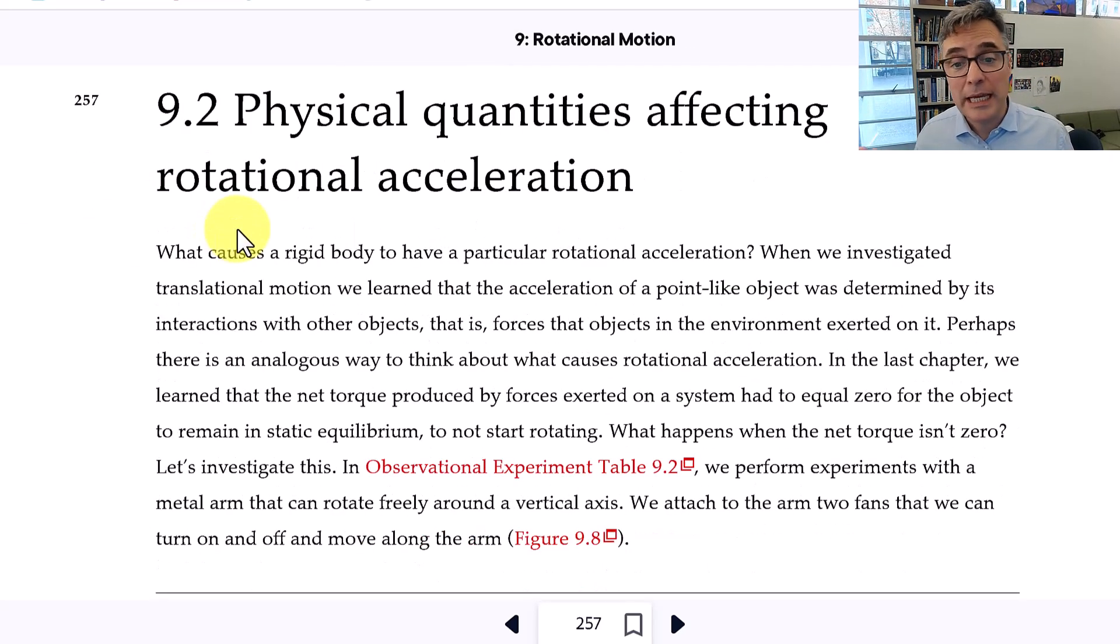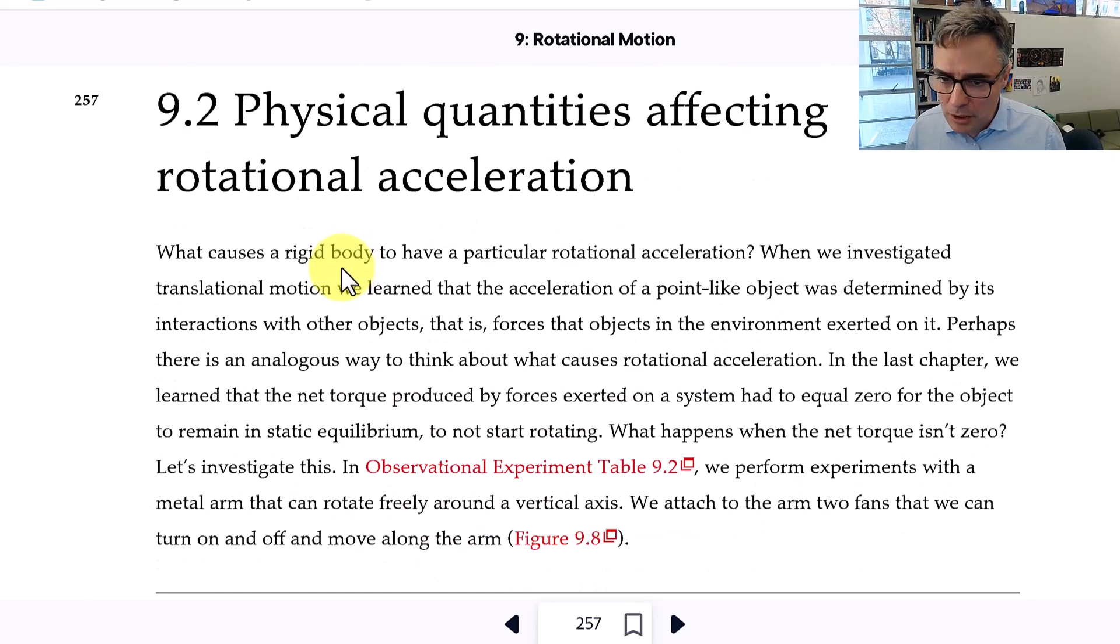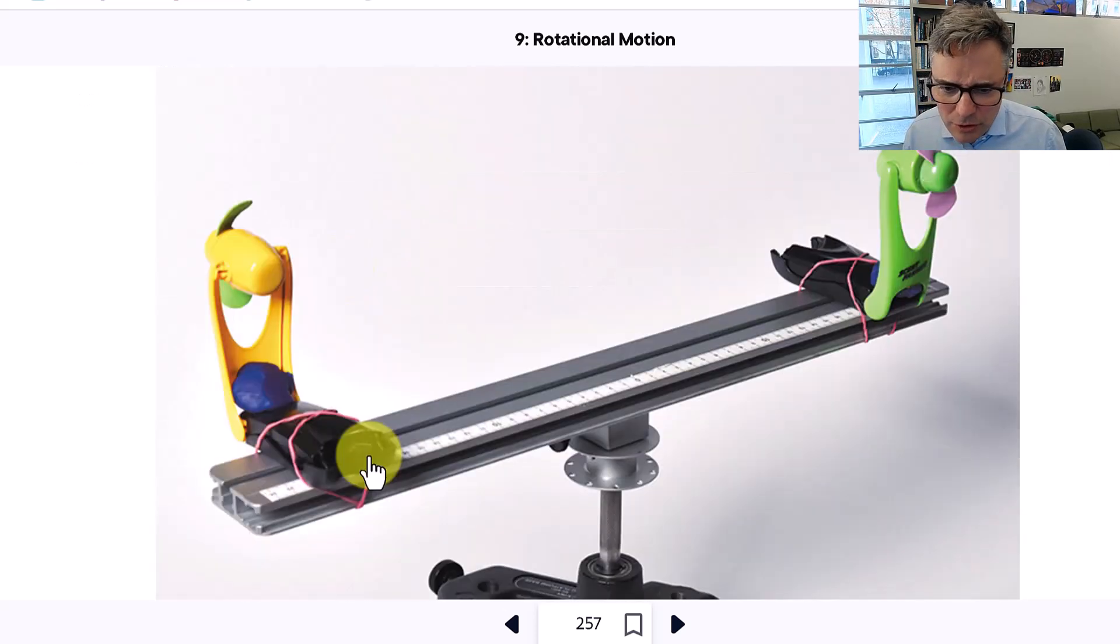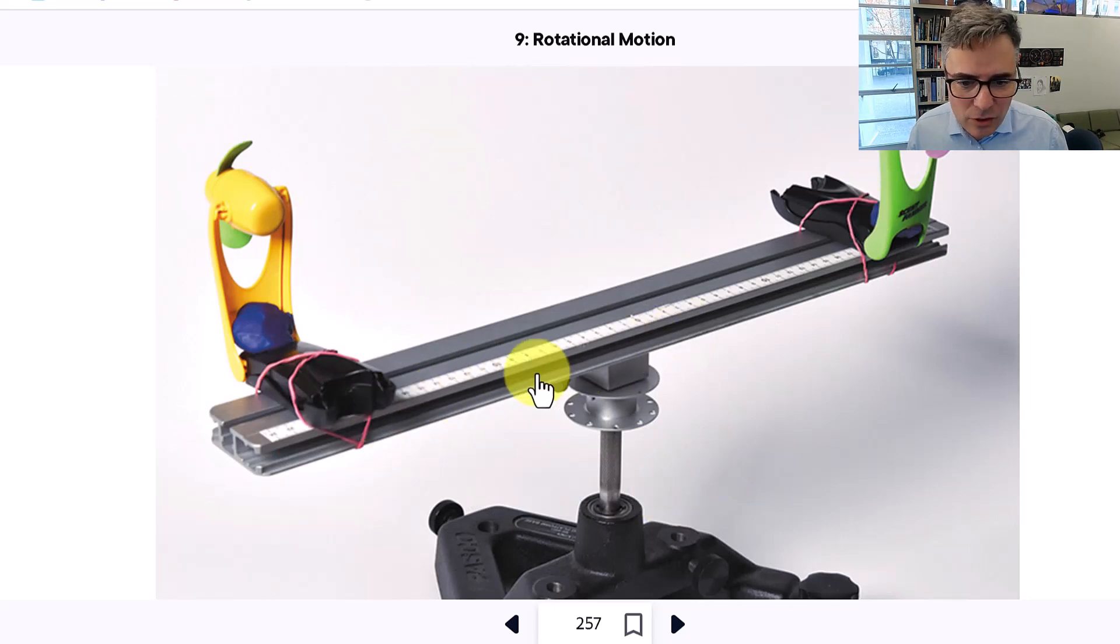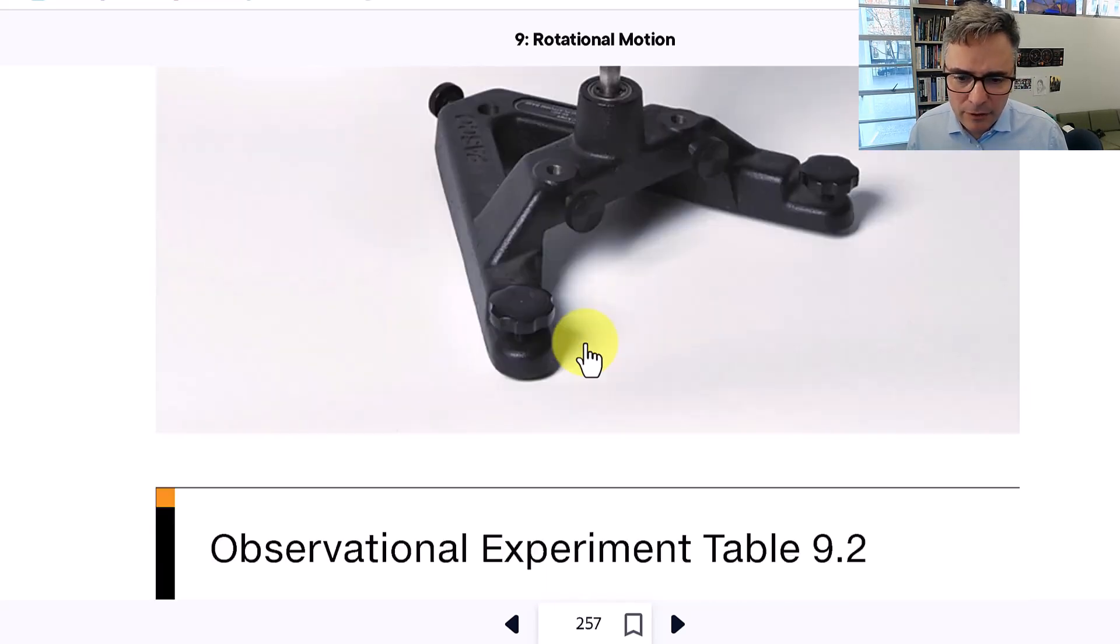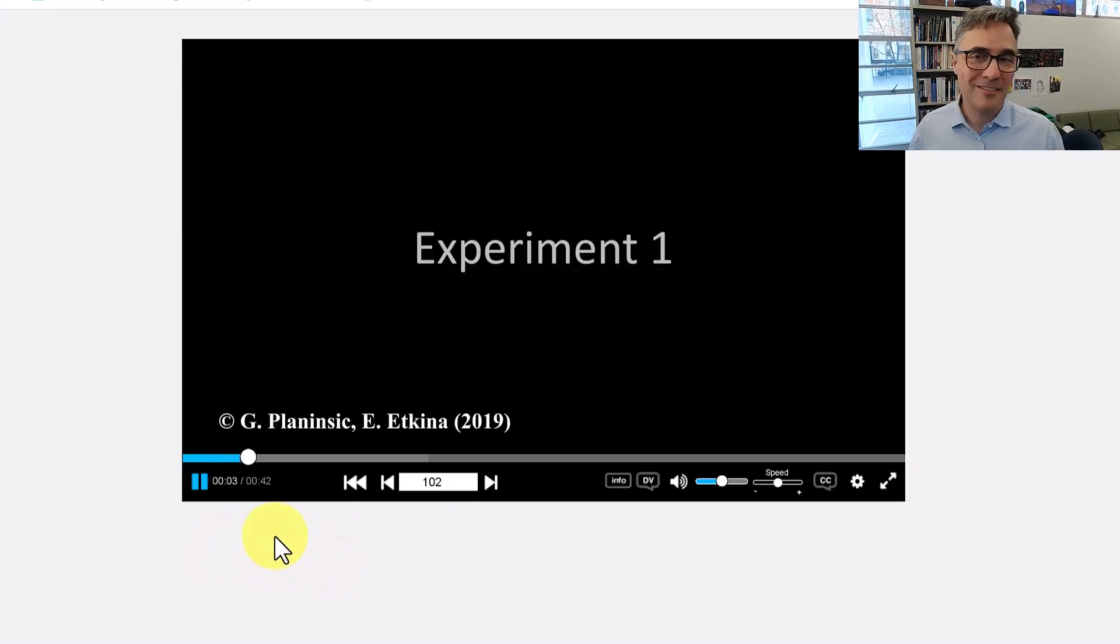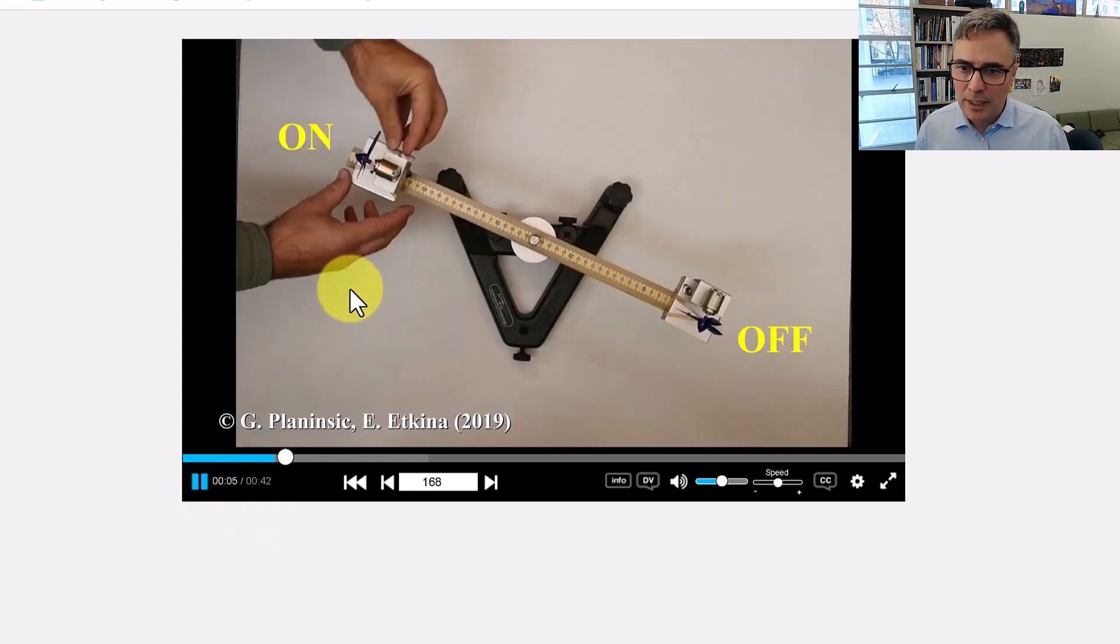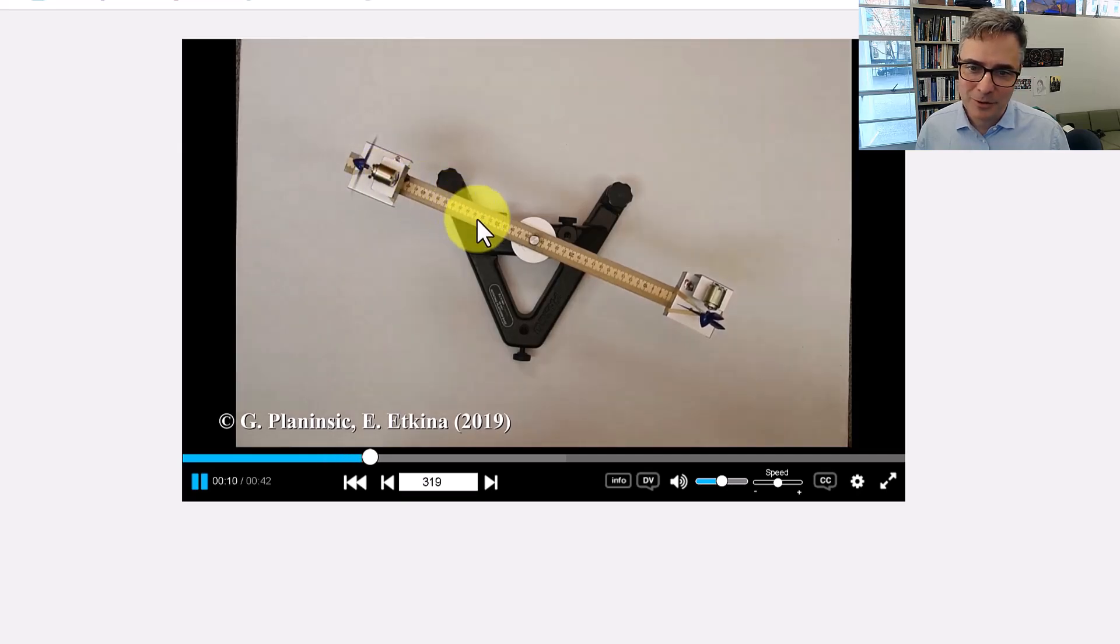And lastly, section 9.2 today is just a conceptual section talking about what are the physical quantities that affect this rotational acceleration. So section 9.3 will be the actual Newton's law for rotation. But this just shows you there's some videos of a bar with two little fans on it, and it can rotate around a vertical axis. So there's a few experiments. I encourage you to watch the video. But basically, experiment one is you turn on the fan and it blows inward. And of course, it doesn't rotate.